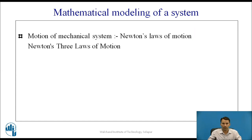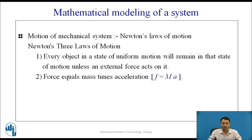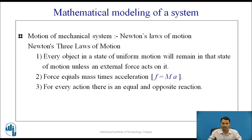There are three laws of motion. The first law: every object in a state of uniform motion will remain in that state of motion unless an external force acts on it. The second law: force equals mass times acceleration, given as F = m × a. The third law: for every action, there is an equal and opposite reaction.